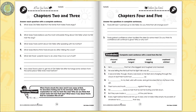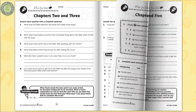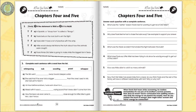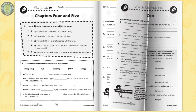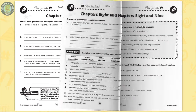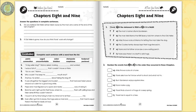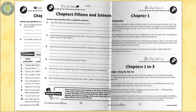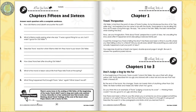Enter the mind of Travis as he explains his feelings after shooting the deer. Identify statements about the novel as true or false. Describe how Travis's attitudes change towards certain characters from the story. Predict what will become of Old Yeller based on events from previous chapters.